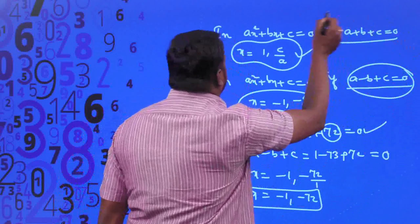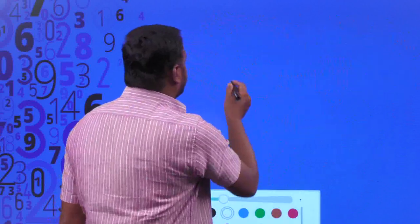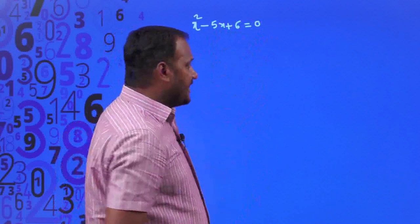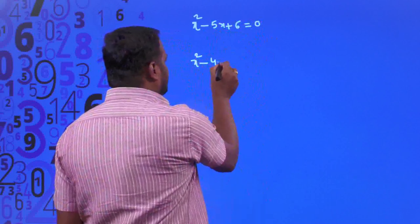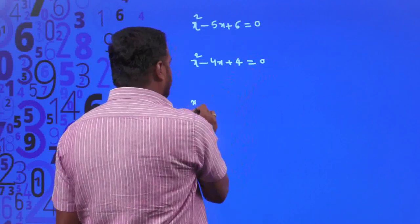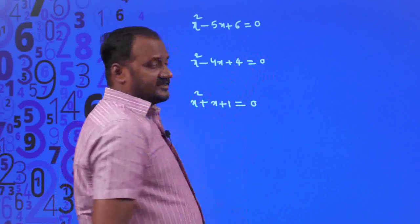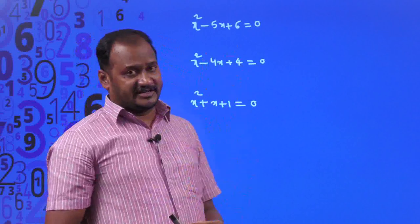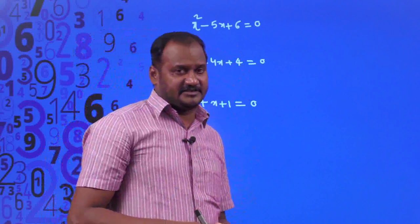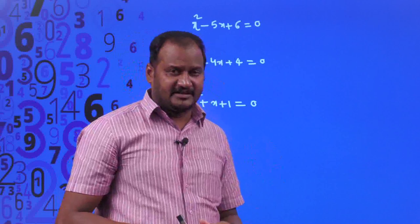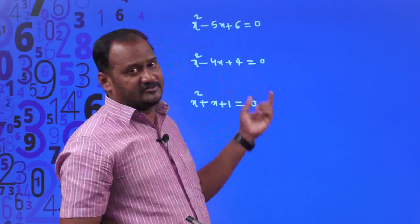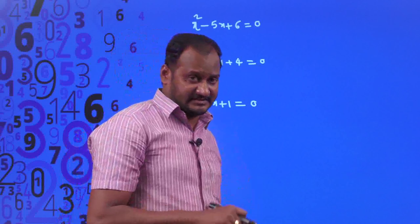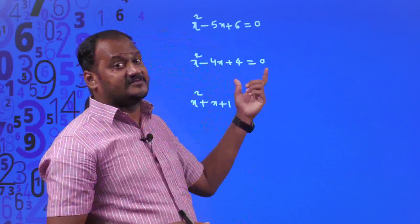Let us consider three quadratic equations: x² - 5x + 6 = 0, x² - 4x + 4 = 0, and x² + x + 1 = 0. Using splitting the middle term, quadratic formula, completing the square, or any algebraic method, you can find the roots. But before that, I want to know the nature of the roots without actually performing calculations.